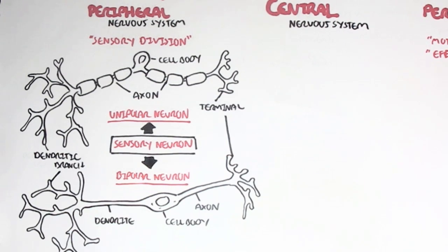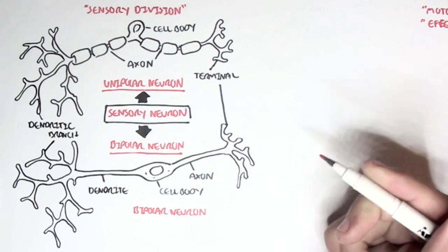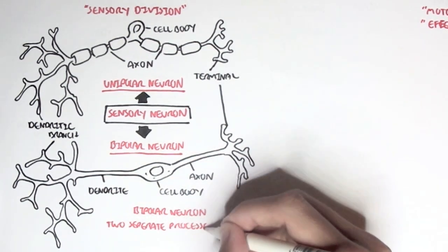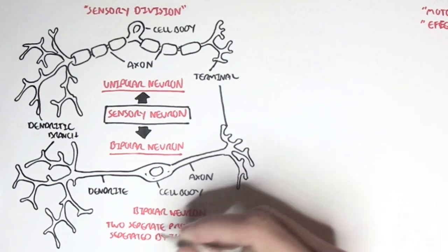As you can see, the unipolar and bipolar neuron are only slightly different. The bipolar neuron, we have two separate processes separated by the cell body. So we have the dendrite and then the axon on one end.